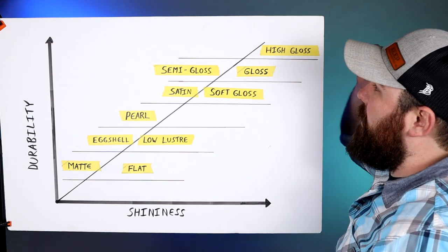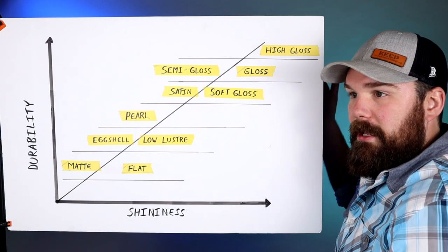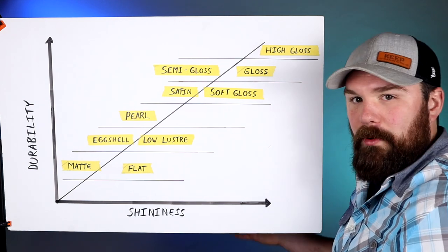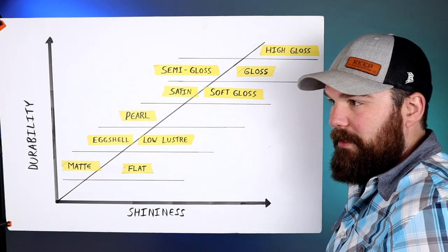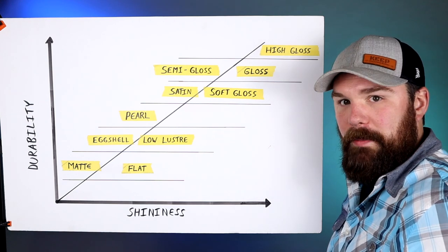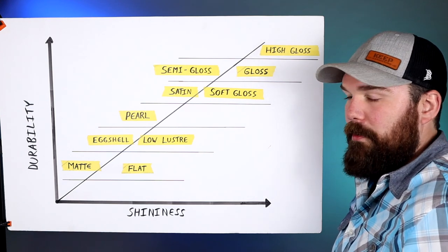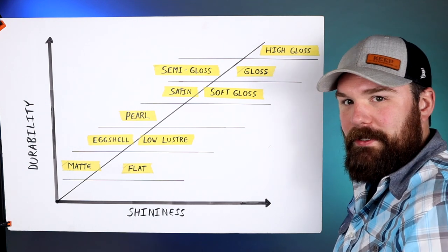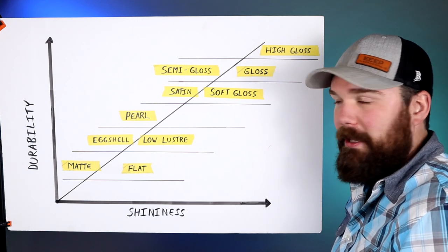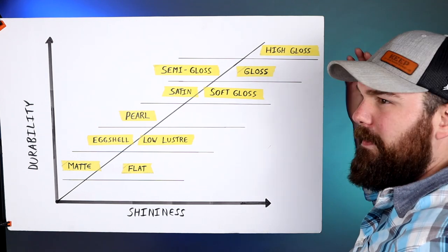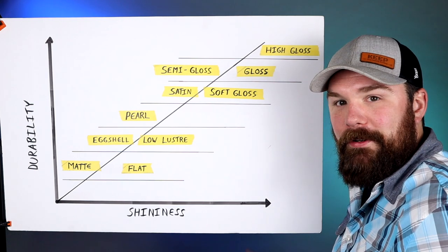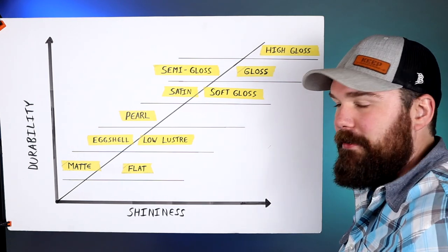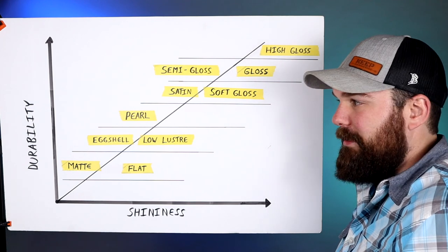And then up here you've got high gloss. You'll see that more in like special use scenarios. Some people really like to find a high gloss paint for their front door because they want it really really shiny. You just got to be careful with that because you're gonna see all the brush strokes and you got to take a little bit more care with how you apply it. And then the other one would be like maybe like a fire hydrant or something like that that is industrial and needs to stand up in all kinds of weather and things like that.